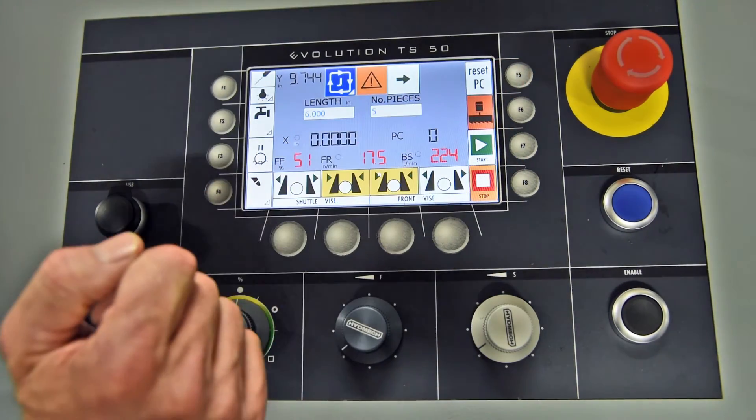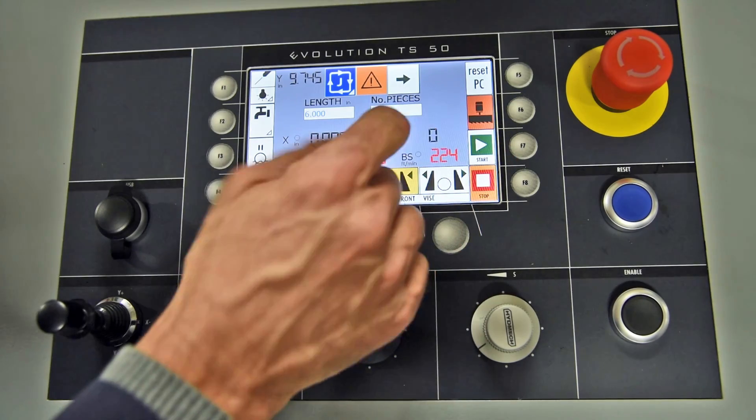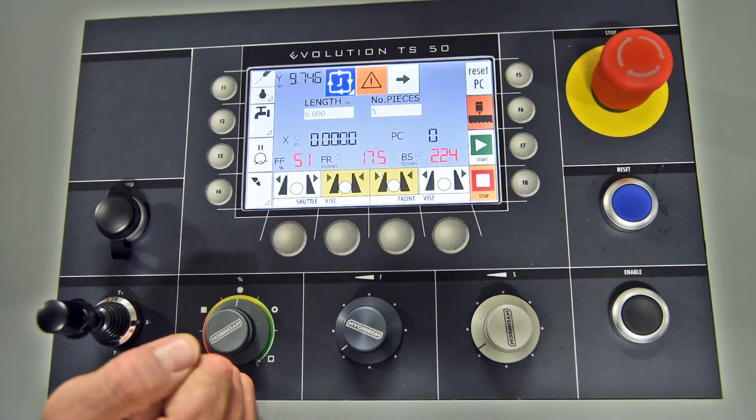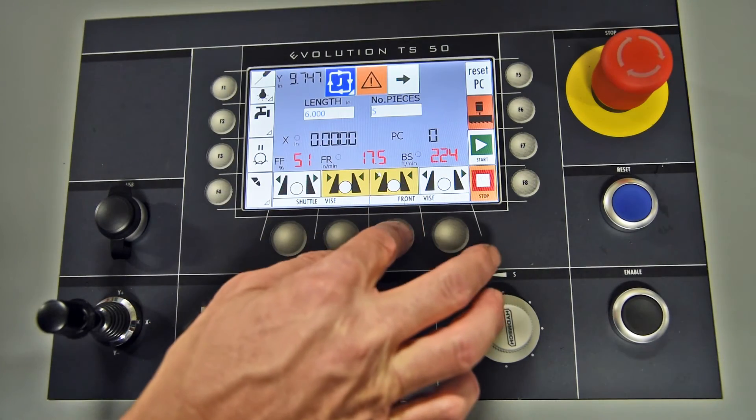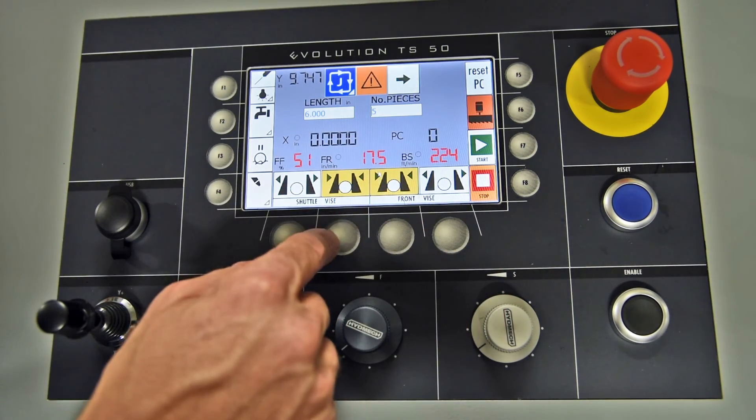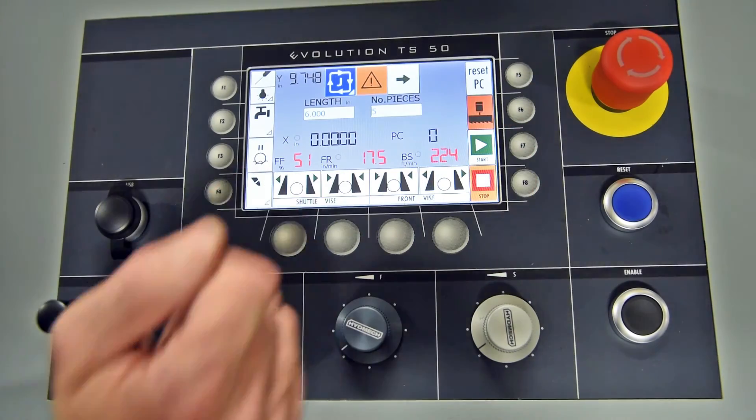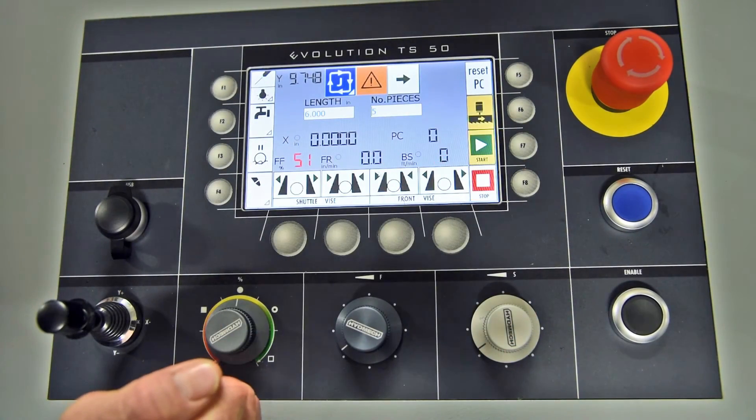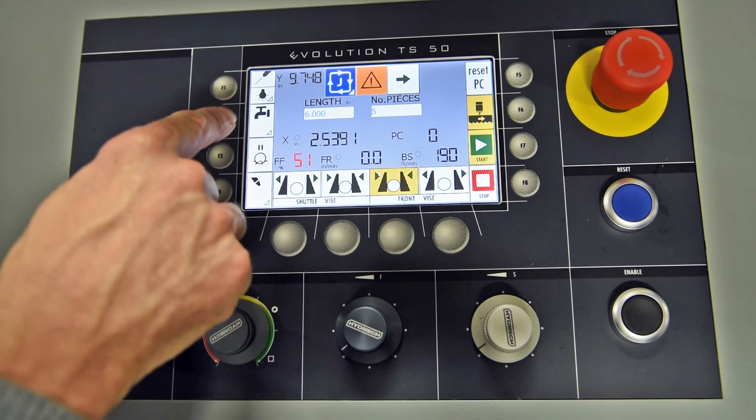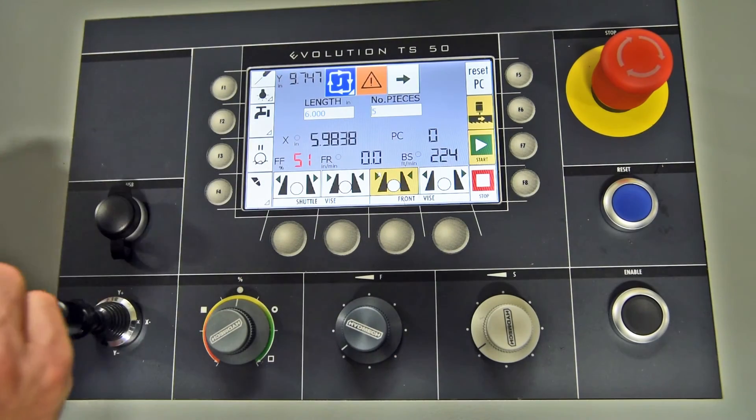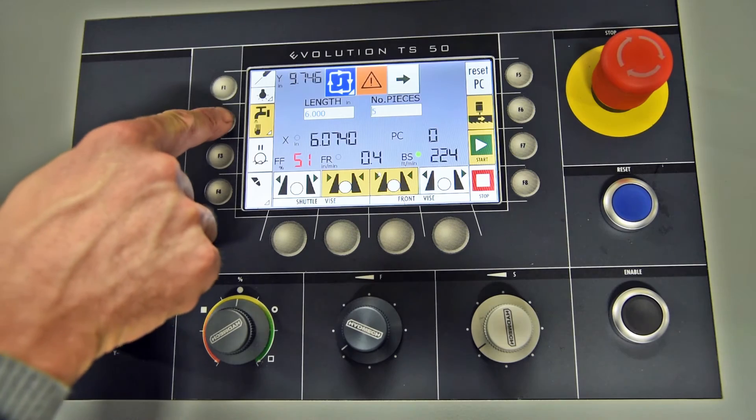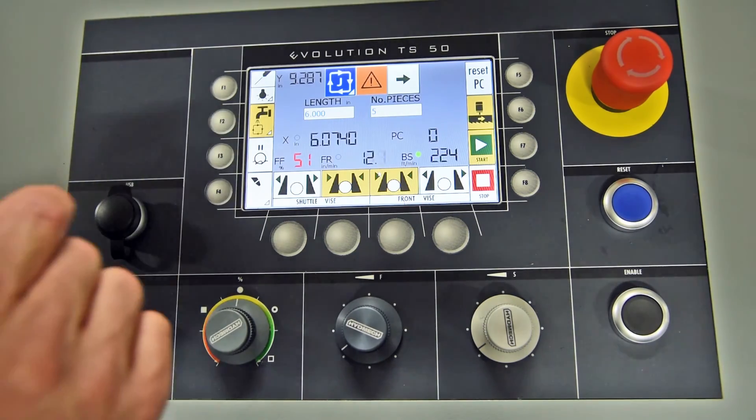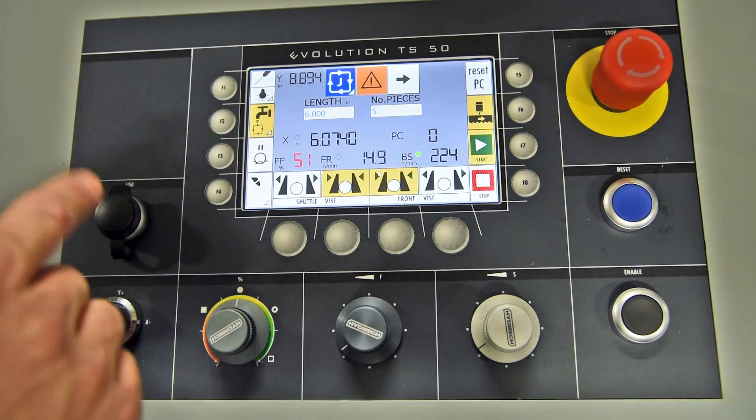At this point, the PC is already set to zero. If there was a value there, you would push F5, reset PC. At this point, my front vise is closed. My shuttle vise is closed. F6 is blade enable. F7 is blade start. Cycle start. Turn my coolant to the auto position, which would be the square box with the arrows.